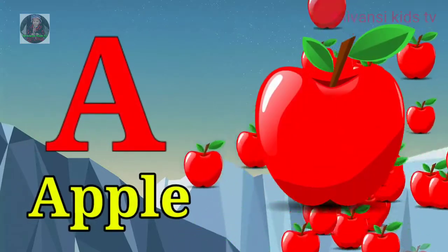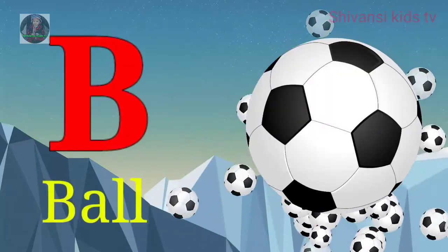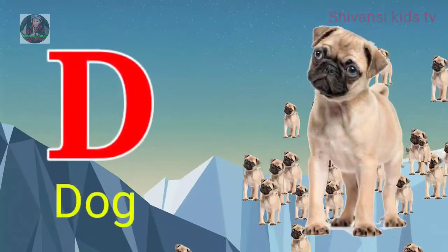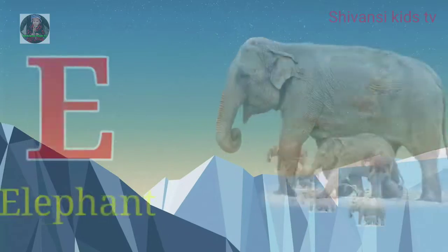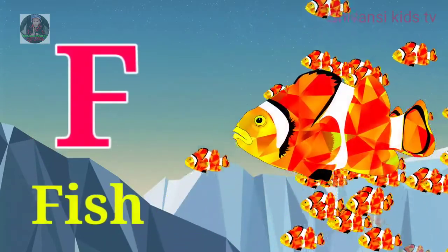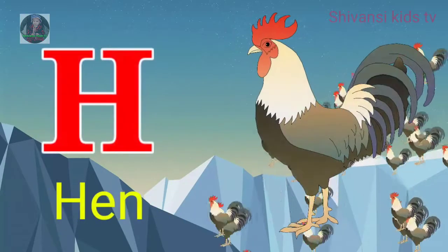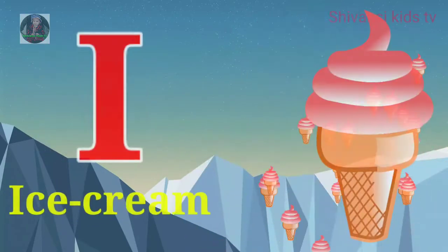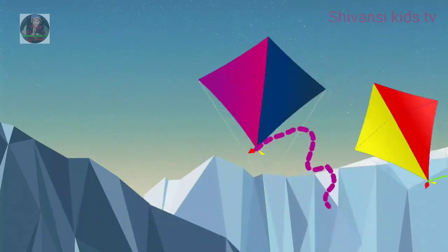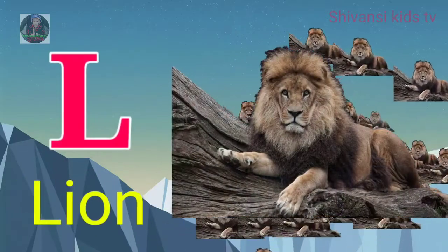A for apple, B for ball, C for cat, D for dog, E for elephant, F for fish, G for grapes, H for hand, I for ice cream, J for jug, K for kite, L for lion.